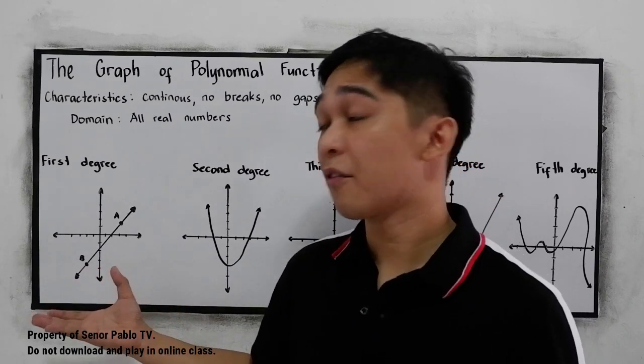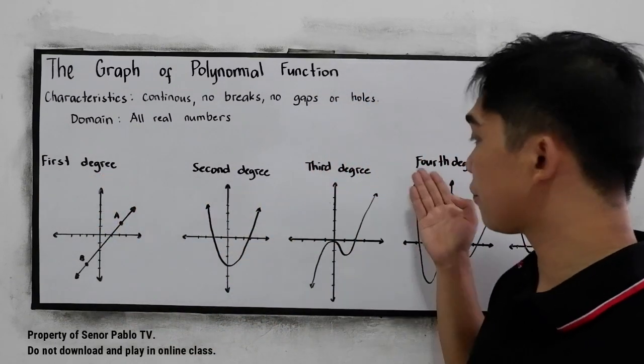We have the following graphs: for the first degree, second degree, third degree, fourth degree, and the fifth degree.